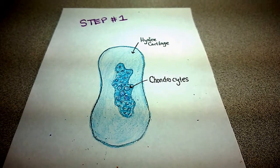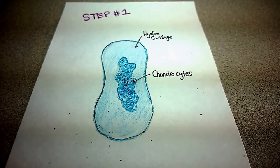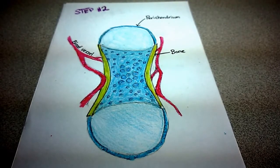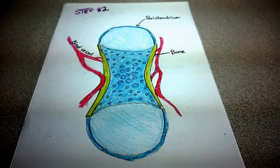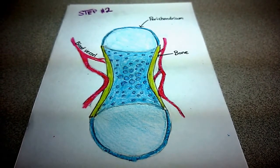In step two, blood vessels grow around the hyaline cartilage. The perichondrium, that is the layer around cartilage that provides a diffusion layer, converts to osteoblasts. Osteoblasts are bone builders. They create a superficial layer of bone around the shaft of the diaphysis.